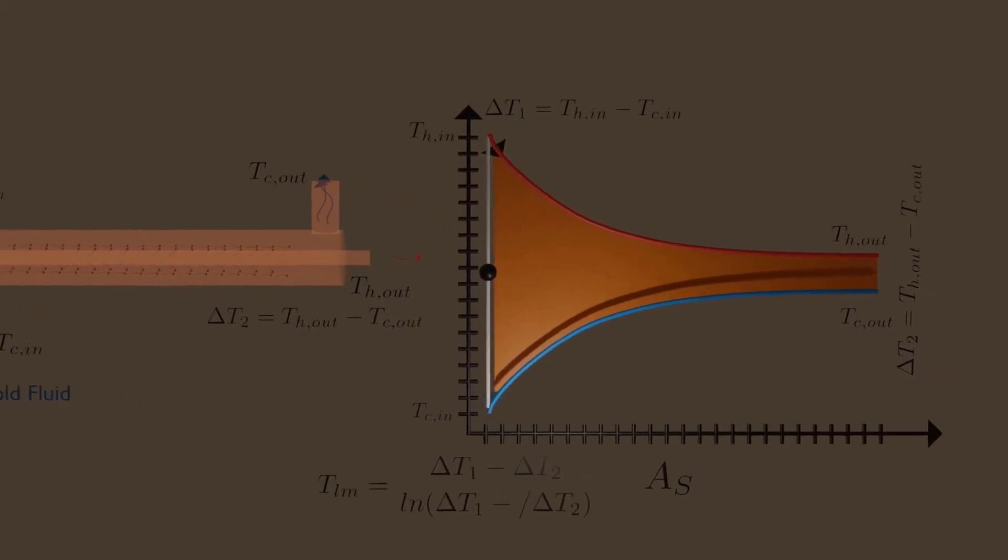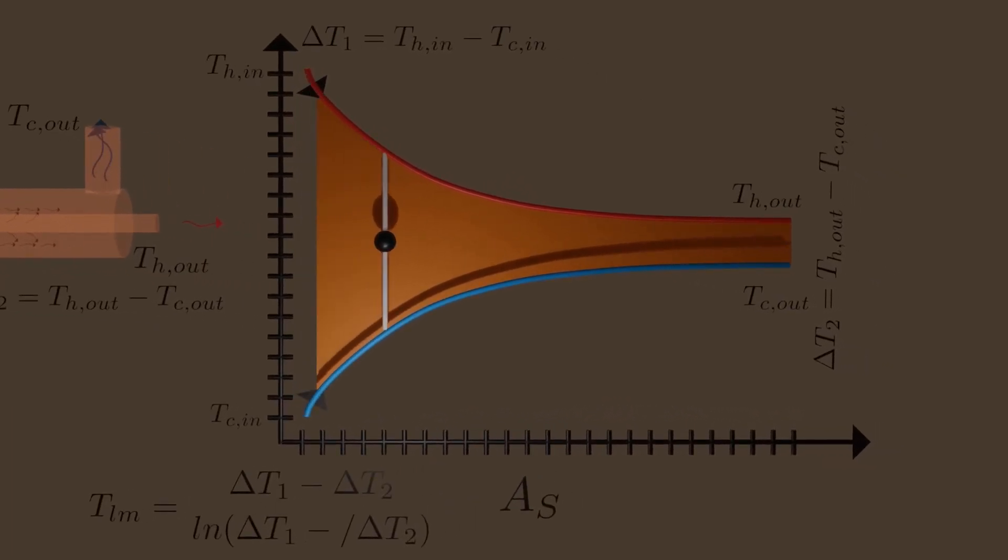Log mean is always less than arithmetic mean, and log mean always lies inside the area between these hot and cold curves. Whereas arithmetic mean might lie outside these curves, which might create greater percentage error. Arithmetic mean can lie anywhere, as indicated by green square. It might even lie outside, so it is always convenient to use log mean temperature difference.